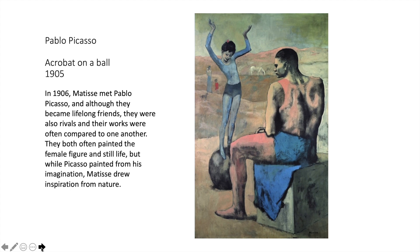This is an early Picasso from his Blue Period — Acrobat on a Ball from 1905. In 1906, the year after this painting was made, Matisse met Pablo Picasso. Although they became lifelong friends, they were also rivals — very competitive — and their works were often compared to one another in the press by art critics. They both often painted the female figure and still lifes. While Picasso painted largely from his imagination, Matisse drew inspiration from nature.